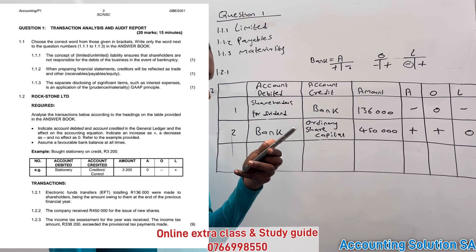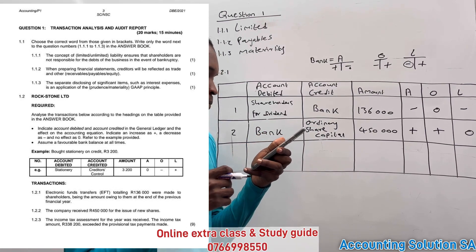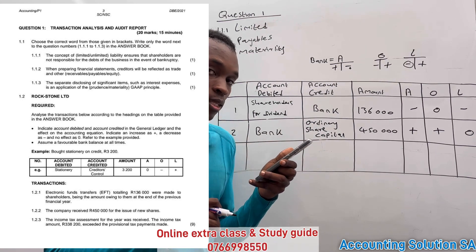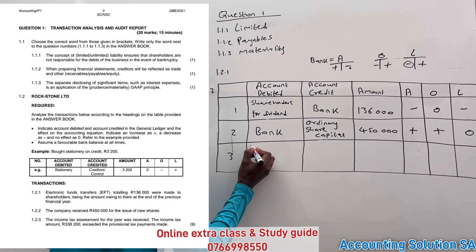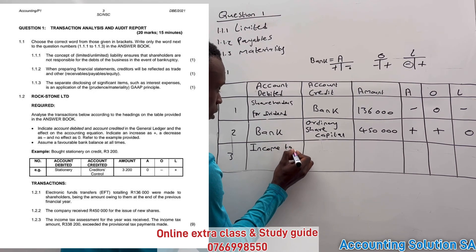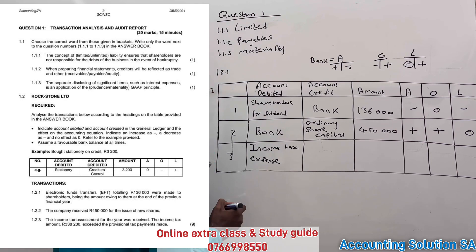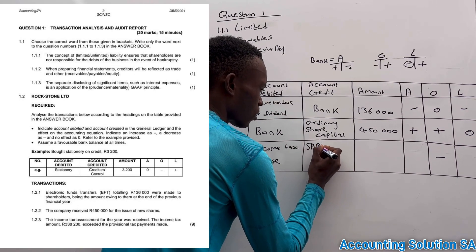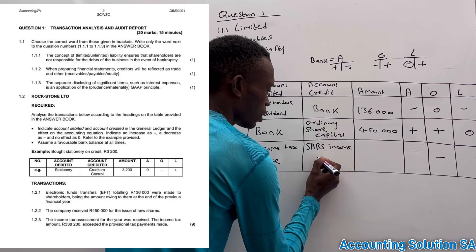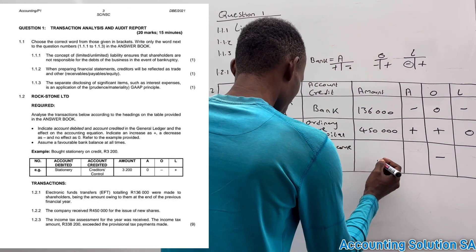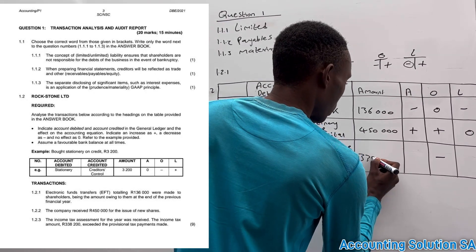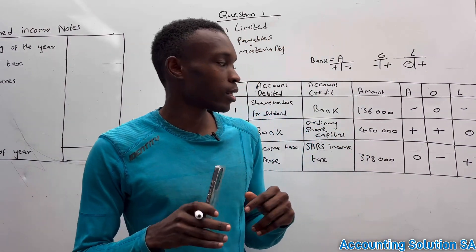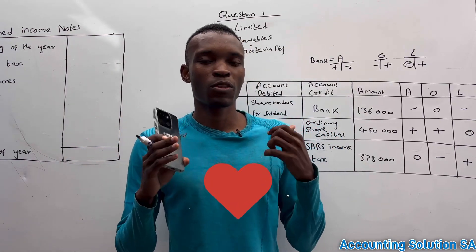The next one: the income tax assessment for the year was received and income tax was calculated as 338,000, which exceeded the provisional tax payment made. This means we recognize an income tax expense — which is a minus under owner's equity — and we also recognize income tax payable, because they calculated that we owe 338,000. This means liability will go up. This is how we should do transactions related to a company.